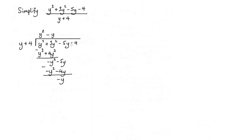We bring down the next term, which is negative 4. How many times does y plus 4 go into negative y minus 4? Well it would be negative 1. We multiply again: negative 1 times y is negative y, and negative 1 times 4 is negative 4. When we subtract these we get 0, and therefore we can stop.